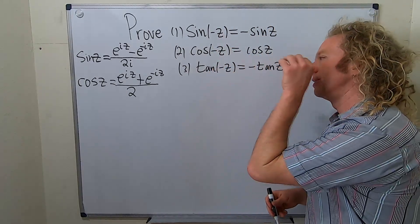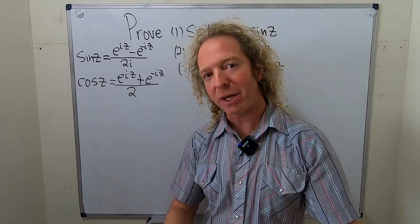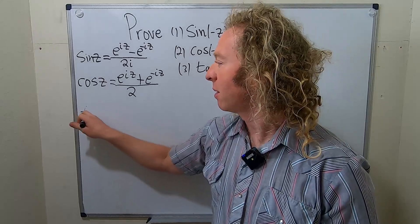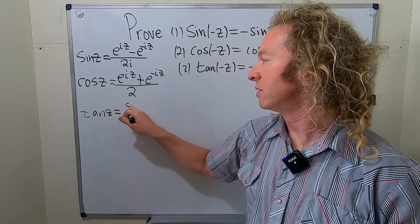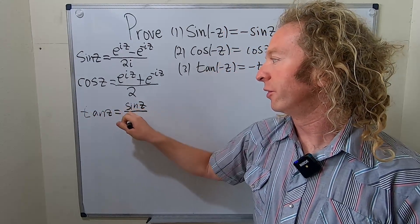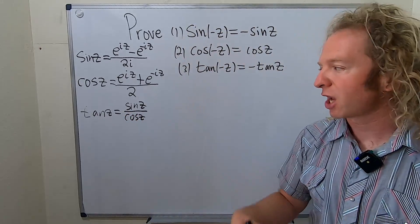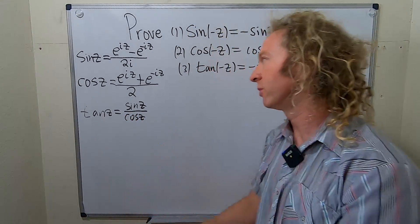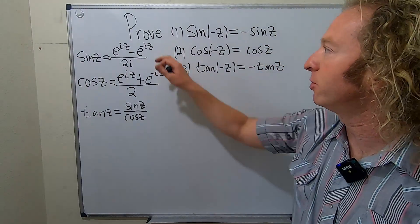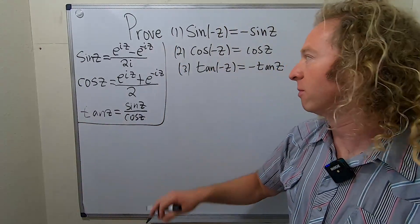The tangent function is sine over cosine. So the complex valued tangent function is sine z over cosine z. This is very similar to what you see in trigonometry. Okay, we got this. We should be able to do this. No problem at all.